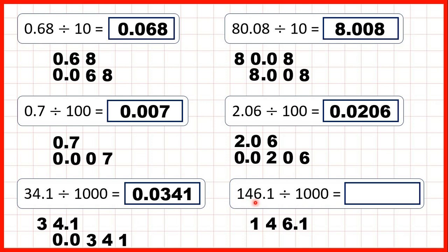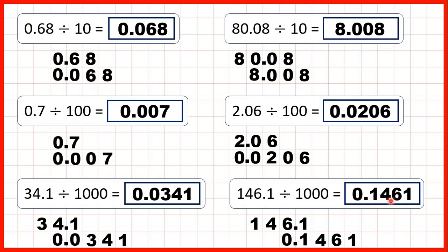Now we have 146.1 — we copy down the decimal point, and to divide by a thousand the digits move three squares to the right. A thousand has three zeros, and we can think of dividing by 1000 as dividing by 10, then by 10 again, and then by 10 a third time. Copying each digit three squares to the right, we now have an empty ones column, so we write a zero before the decimal point, giving us 0.1461.